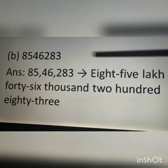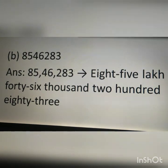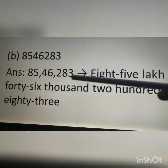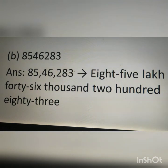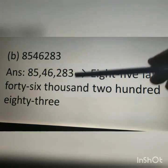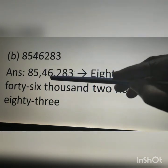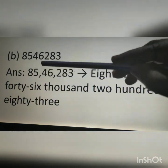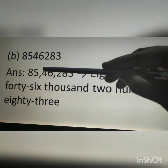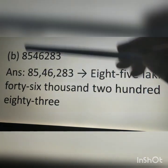Second question: we put commas according to the Indian system of numeration. From the right, after 3 digits comes the first comma, and after 5 digits comes the second comma. We read it as 85,46,283.